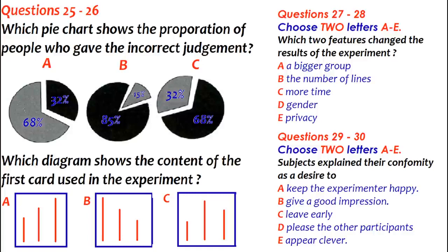What experiments which occurred sometime later found was that other factors can influence the result. For example, when there were more so-called participants, there was even more conformity. On the other hand, when people were able to respond in secrecy — by writing the result down, for instance — they made fewer incorrect judgments about the lines. Subjects gave various explanations for why they made the decisions they did. Although they weren't put under pressure by the experimenter, many felt that they would somehow spoil the experiment and upset the person running it if they didn't agree. More simply, in other cases, they said they just wanted to not show themselves in a bad light. Whatever the reason, Asch's experiment has had a long history.